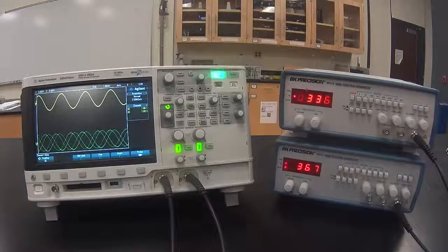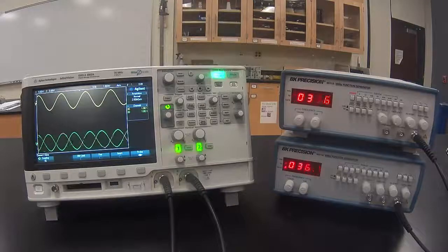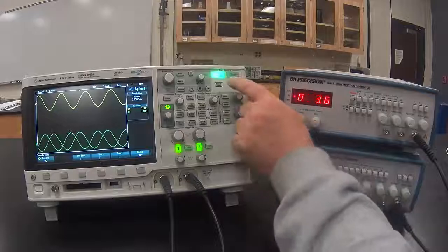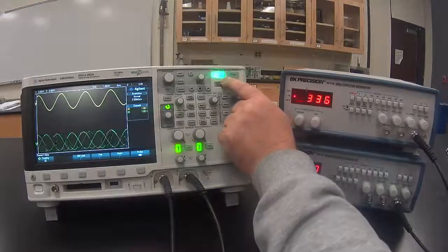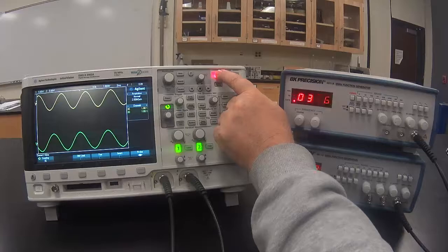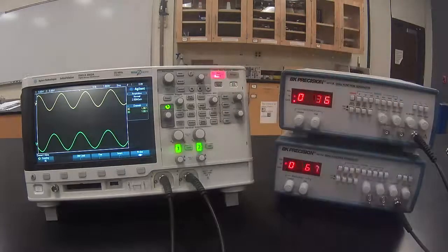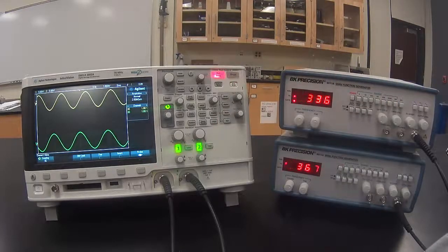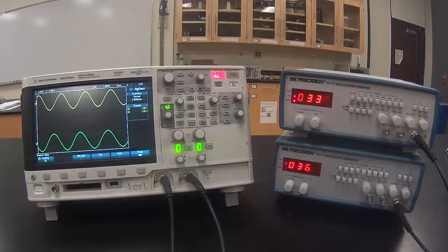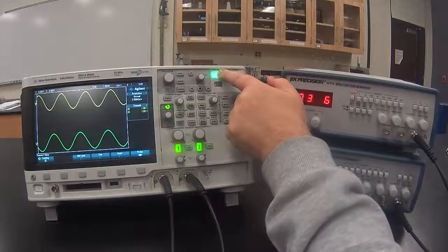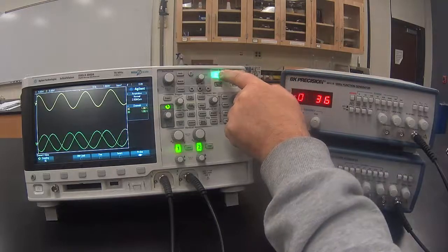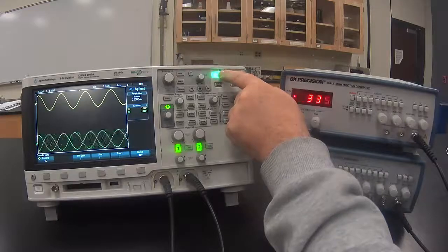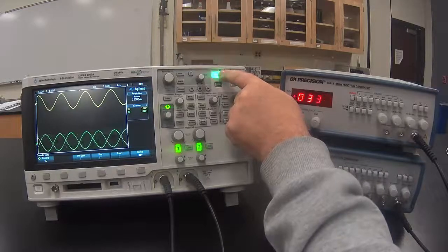If I want to see both signals stable on this scope, I can hit the Run Stop button. This stops both signals. Notice that if I push it several times, the bottom wave doesn't always stop in the same location.